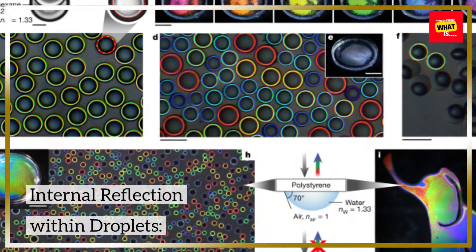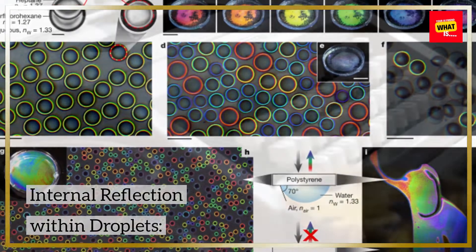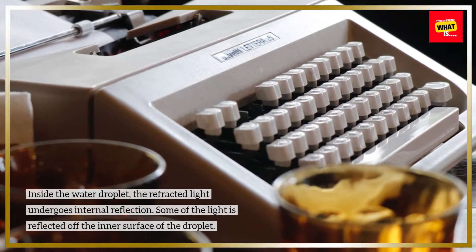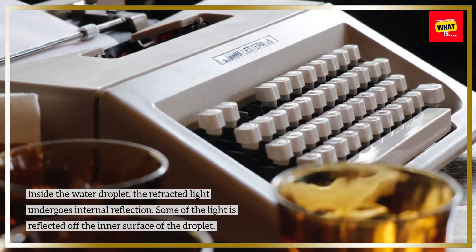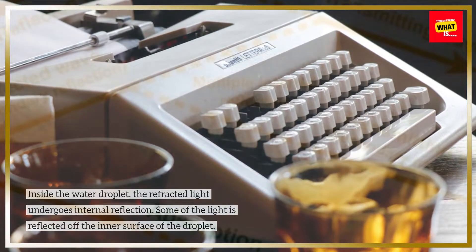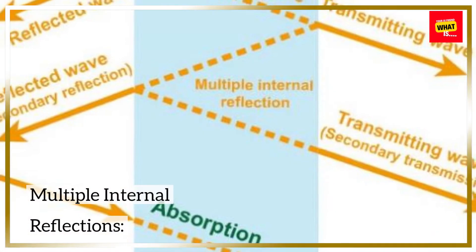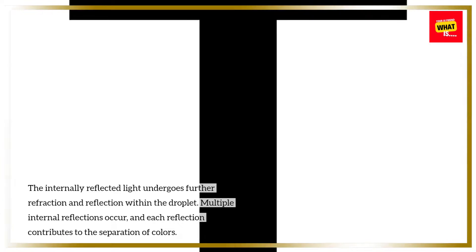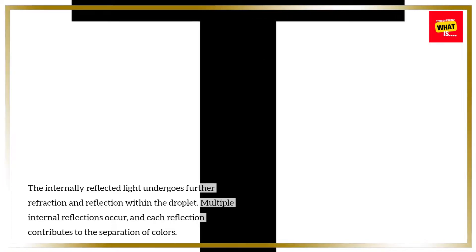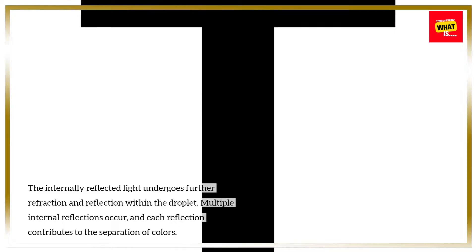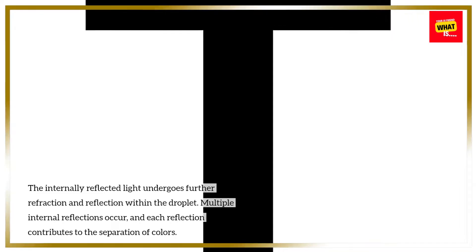2. Internal reflection. Inside the water droplet, the refracted light undergoes internal reflection — some of the light is reflected off the inner surface of the droplet. The internally reflected light undergoes further refraction and reflection within the droplet, and each reflection contributes to the separation of colors.